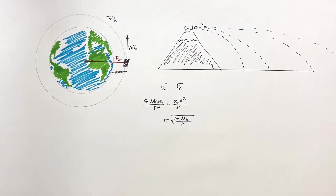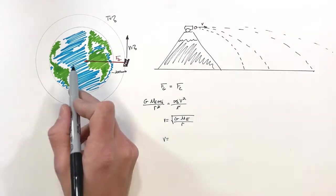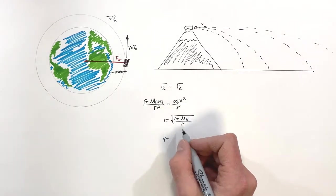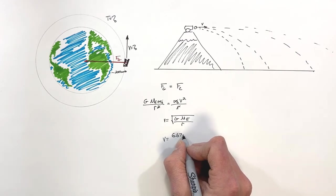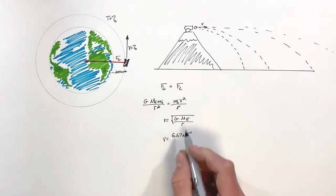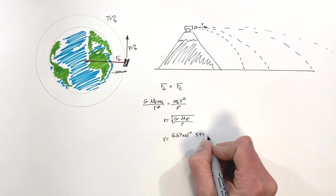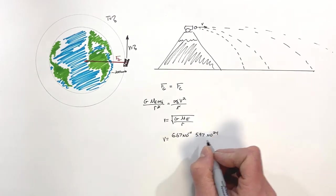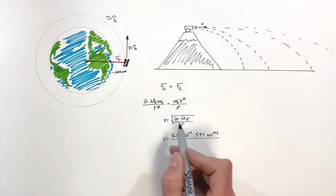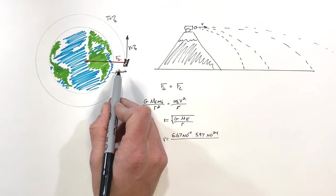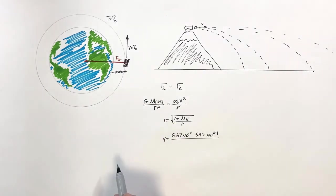Plugging in the numbers: G, the gravitational constant, is 6.67 × 10⁻¹¹; the mass of the Earth is 5.97 × 10²⁴ kg; and the radius of orbit is not just 200 kilometers — that's only how far the satellite is above the surface of the Earth.